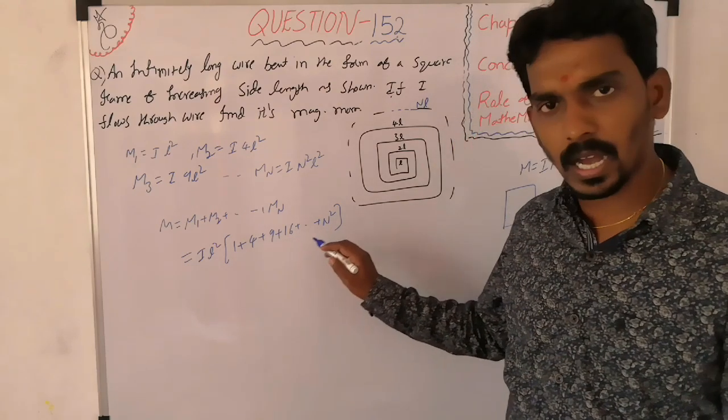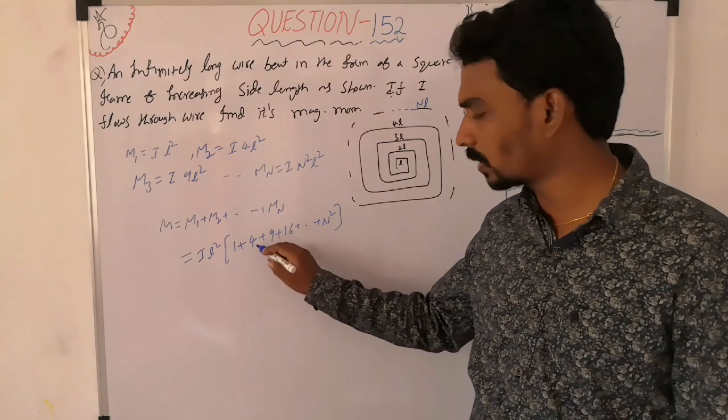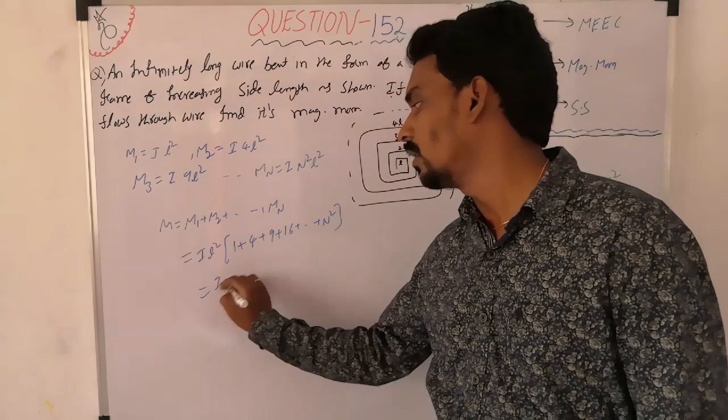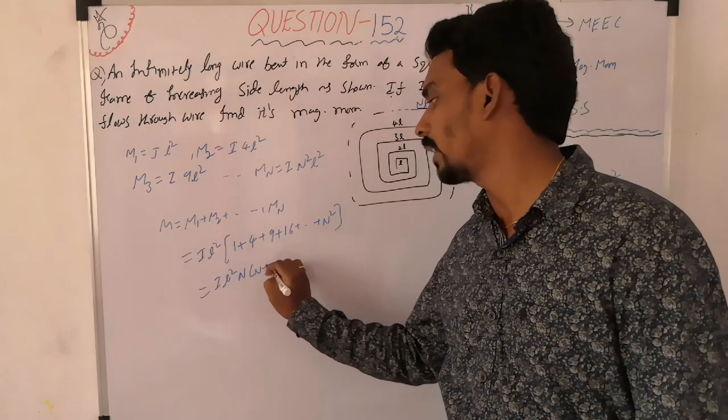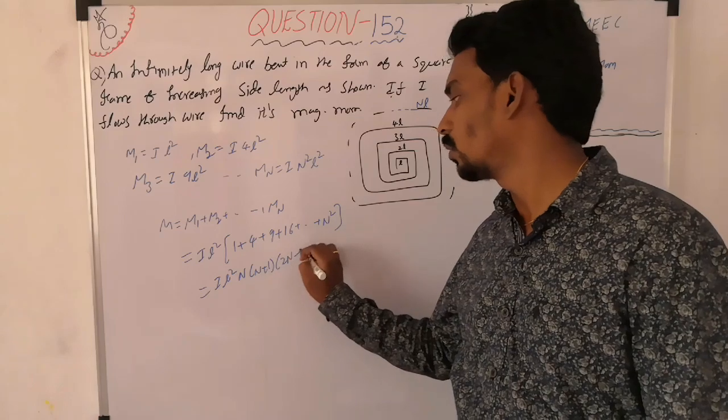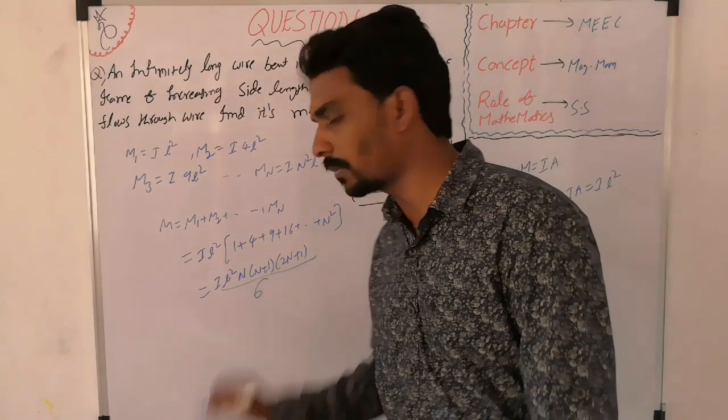Sum of squares of natural numbers: 1 square, 2 square, 3 square, 4 square, and so on. The formula is N into (N plus 1) into (2N plus 1) divided by 6.